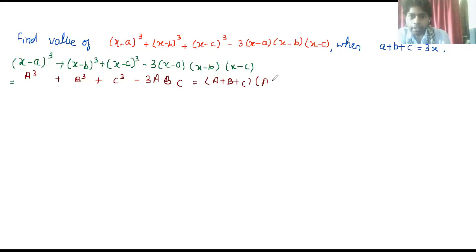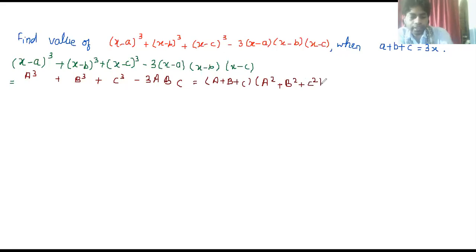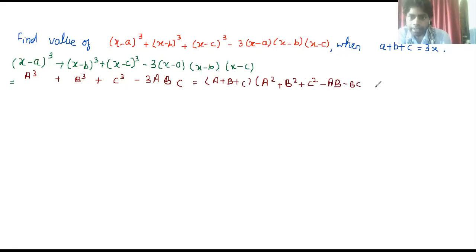The identity states: A³ plus B³ plus C³ minus 3ABC equals (A plus B plus C) times (A² plus B² plus C² minus AB minus BC minus CA). We will apply this identity here.